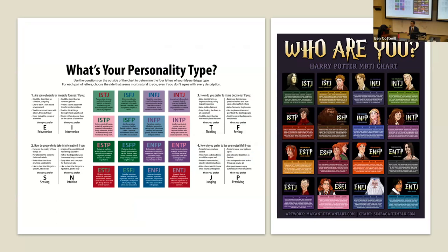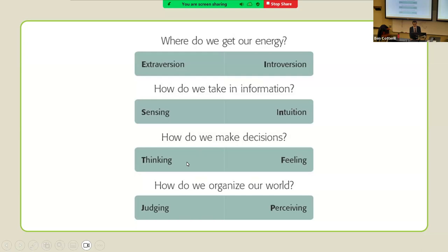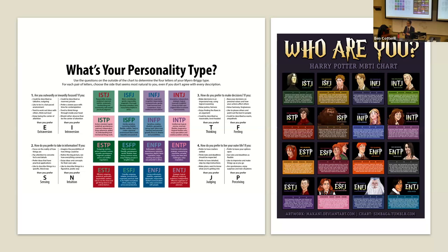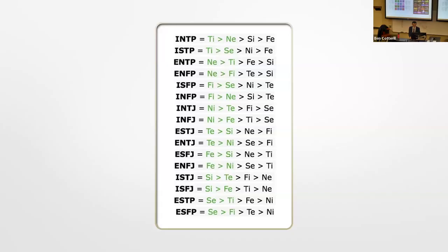These online tests also have pretty poor reliability — 50% of people who retake them get a different type the second time. Usually it's only one letter that changes, and most often it's the thinking-feeling letter. That's not hard to understand: most people score very near the middle, so you only have to answer slightly differently to get a different score. If you're two points above average one time and one point below average the next, that's a different type, but only three points difference. So these online tests are not really capturing what Jung was talking about, or even what the original Myers-Briggs test was looking for.